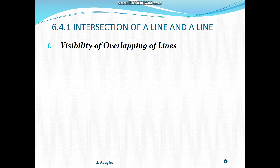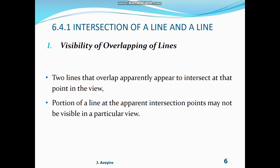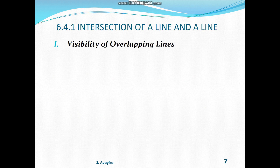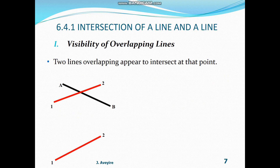Let us look at visibility of overlapping lines where they do not intersect. Two lines that overlap apparently appear to intersect at a point in the view. Portions of a line at the apparent intersection points may not be visible in a particular view. Here we have lines 1,2 and AB shown in the front view and the top view.